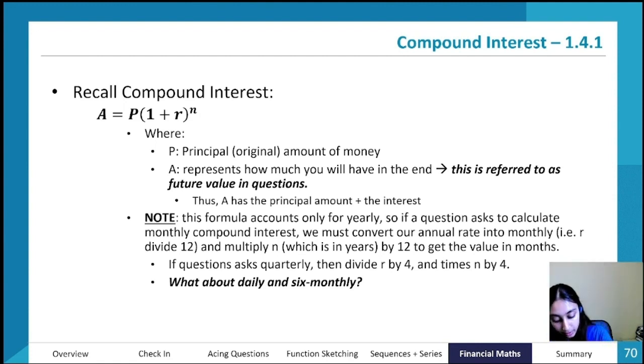Just noting for n and r, they'll give you something that's being compounded weekly, monthly, annually, quarterly, biannually, or whatever. So let's say you've got a question where it's 12 percent per annum compounded monthly.